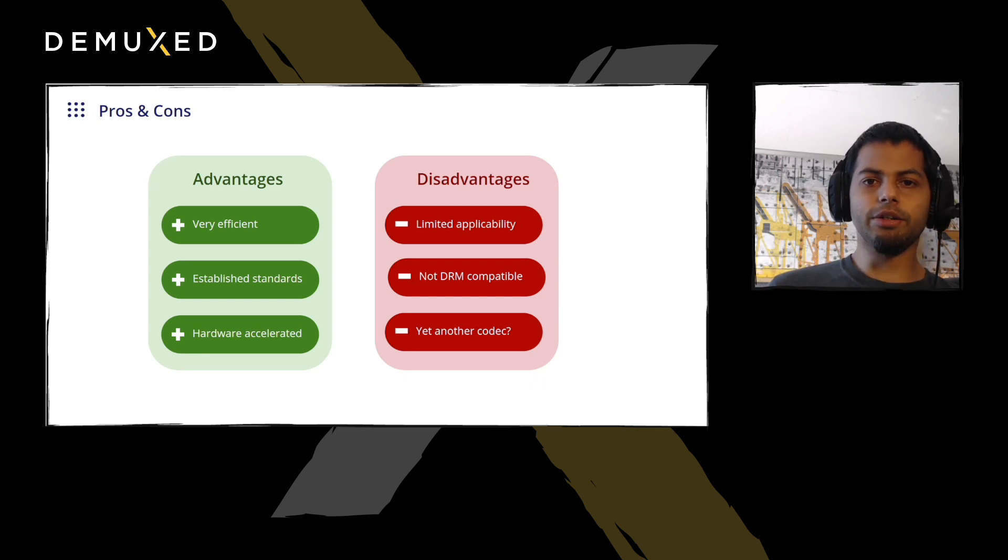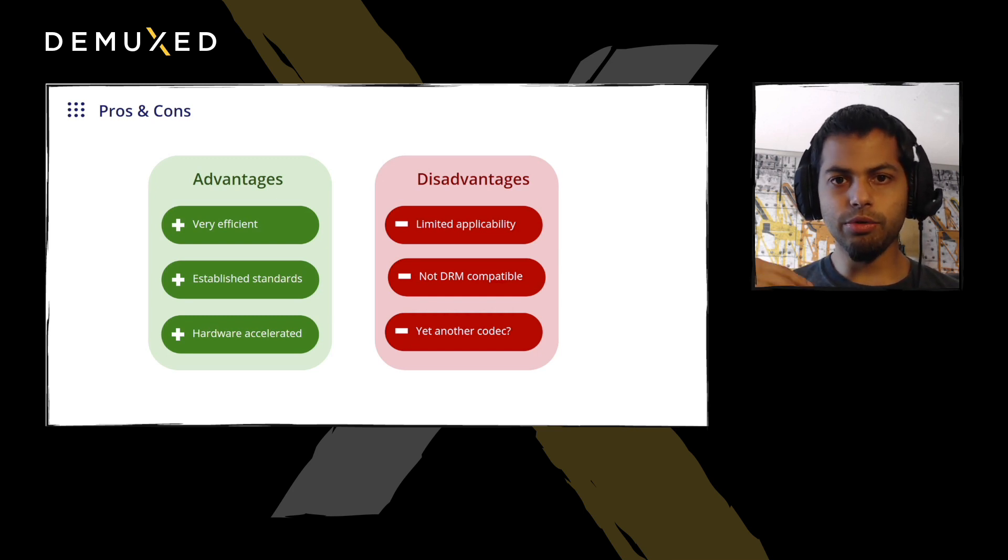The obvious main disadvantage is that there's very limited applicability for this kind of content. And when this is only good for a small subset of content, maybe the video world is already too complicated. So if this only applies to maybe 5% of your content, it may just make sense to use a regular codec like AV1, which can handle all content just fine. And one final disadvantage is that WebGL is not compatible with DRM. That may change in the future, but at least right now, that is a limiting factor to this approach.